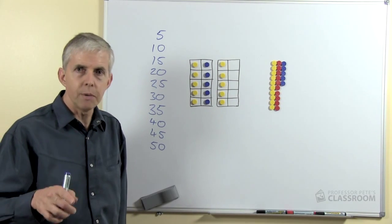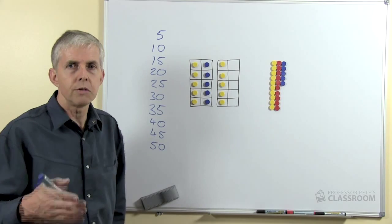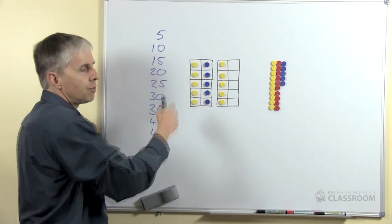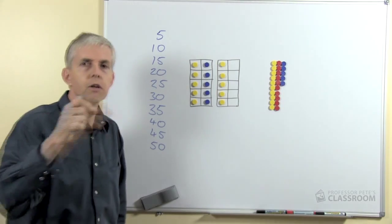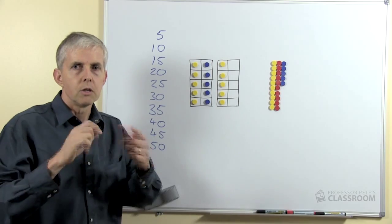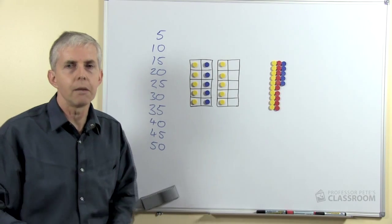But what no one told me as a child was the reason behind it. And of course the reason why it goes 5, 10, 15, 20 and then 25, 30, 35, 40 and so on in that repetitive, sort of two part pattern.